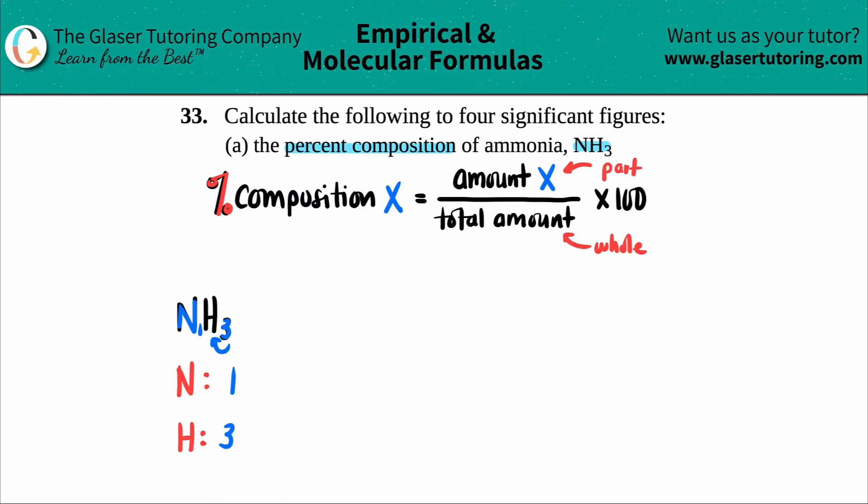And all you're going to do is multiply these numbers, the one and the three, by the molar mass on the periodic table. So get out your periodic tables, guys. Let's see if your numbers roughly match up to mine. So my exact value on the periodic table for nitrogen is 14.01.